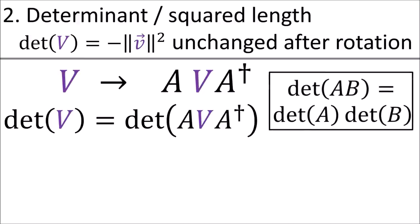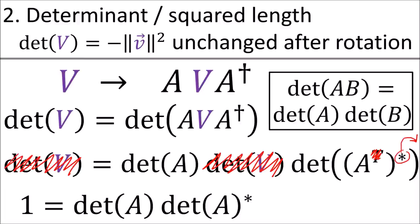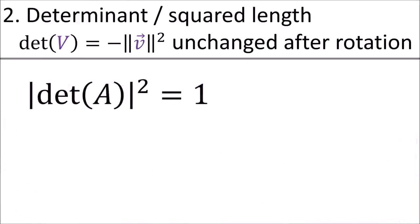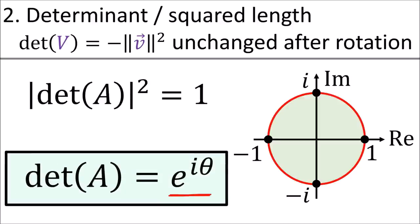Next, we want to know that the determinant—or negative squared length—of our polyvector should not change after the transformation, so these two determinants must be equal. If we recall that the determinant of a product is just the product of the determinants, we can cancel the determinant of v on both sides. The transpose does not change the determinant result, so we ignore it, and we can bring the complex conjugate outside. So we end up with the squared magnitude of the determinant of A being 1.